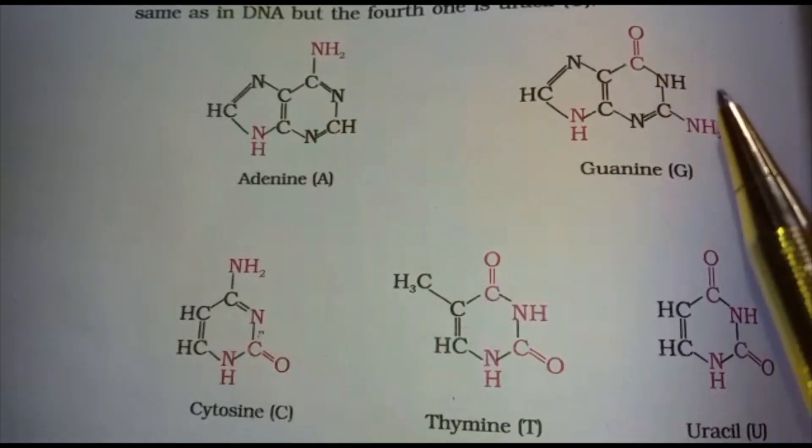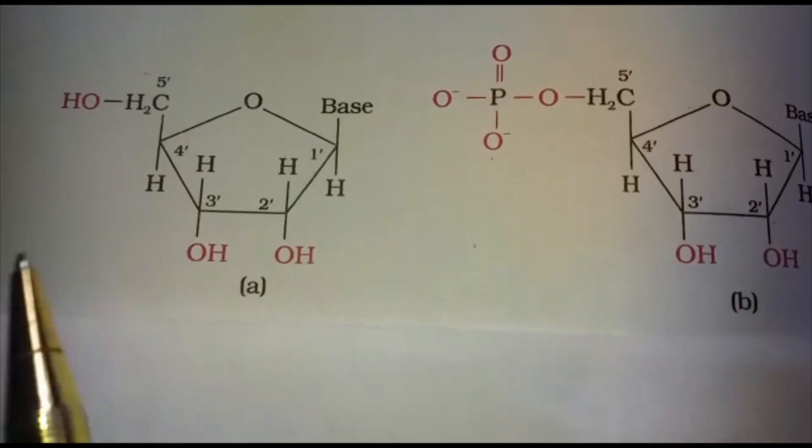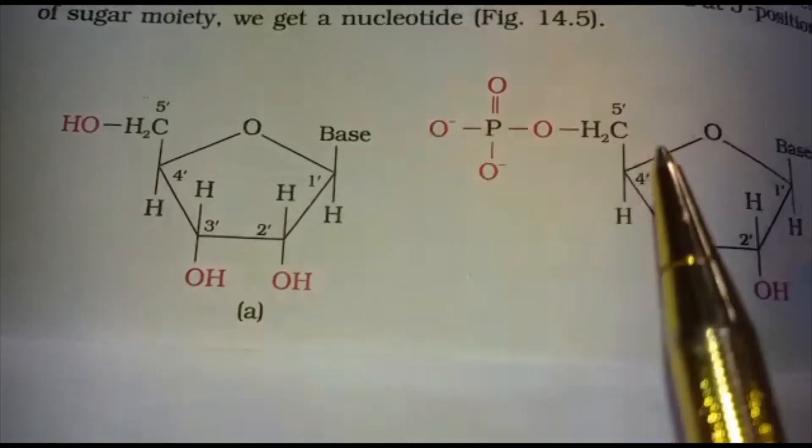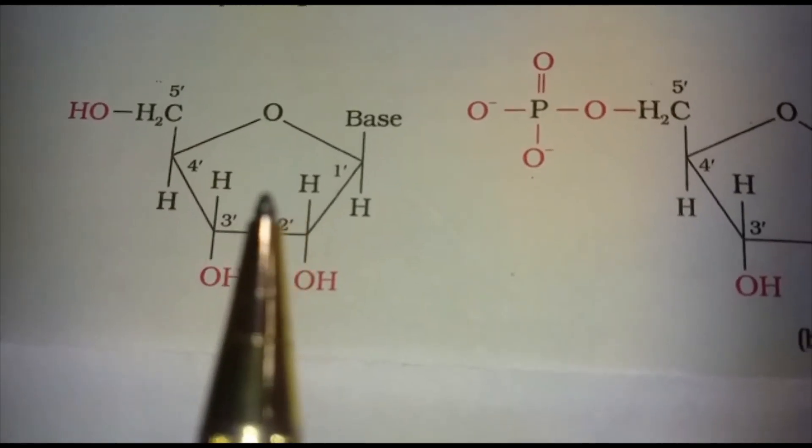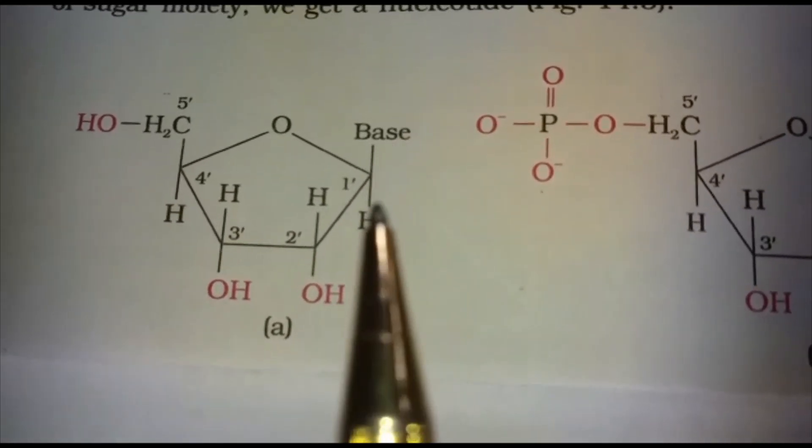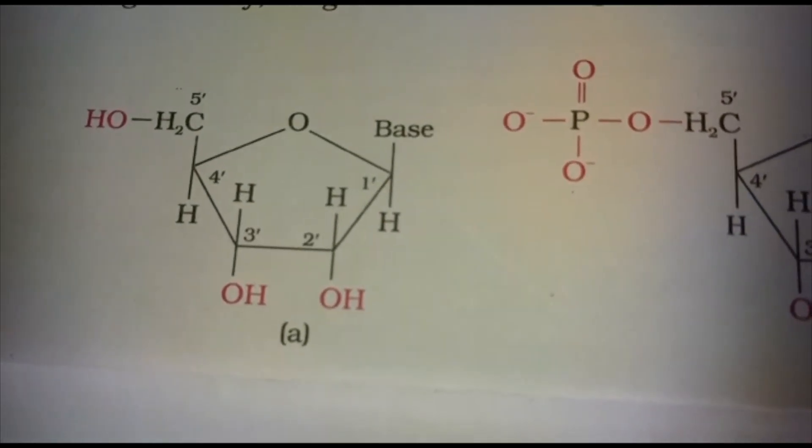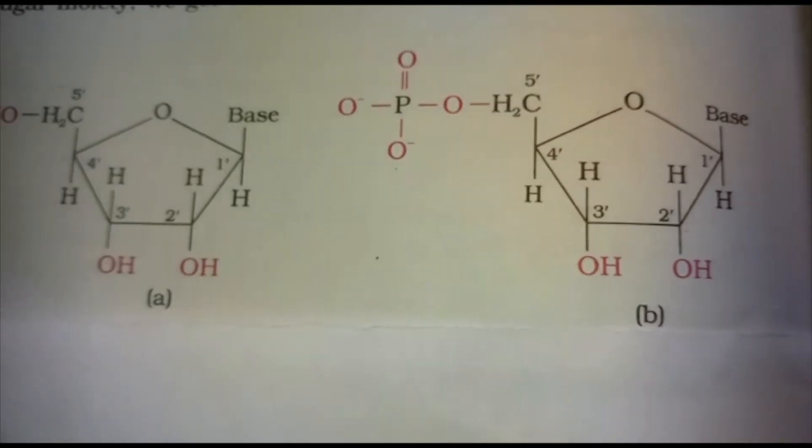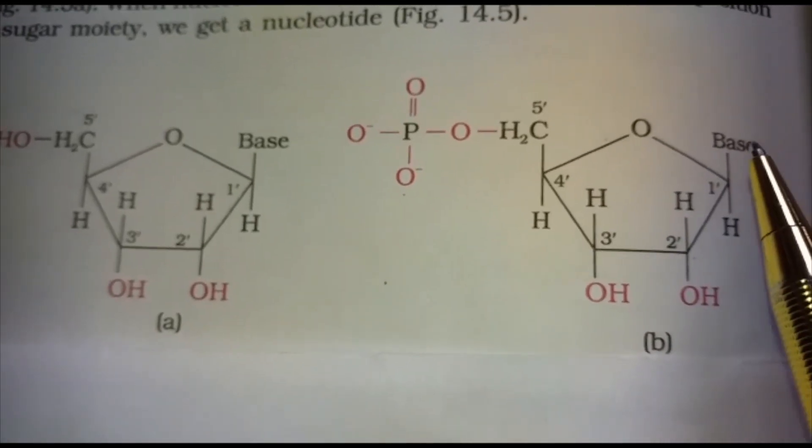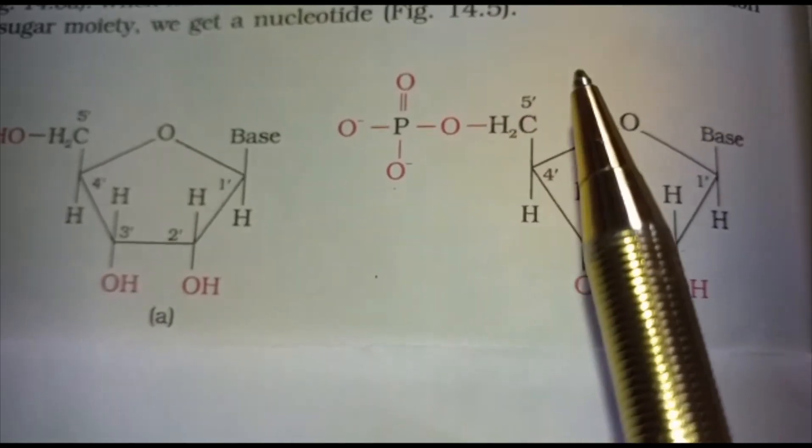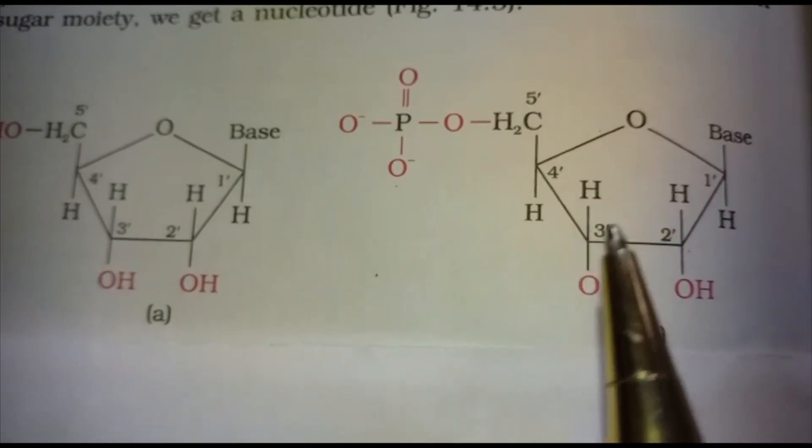This is the structure of a nucleoside, and this is the structure of a nucleotide. When the base is attached to the 1' position of the sugar moiety, it is known as a nucleoside. This structure is a nucleotide: when the base is attached to the 1' position and the phosphoric acid linkage is attached to the 5' position of the sugar moiety, then it is known as a nucleotide.